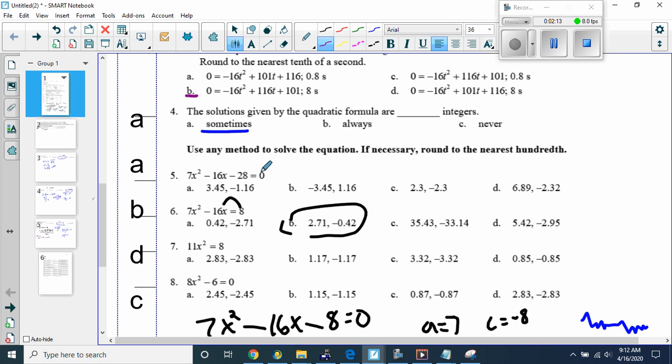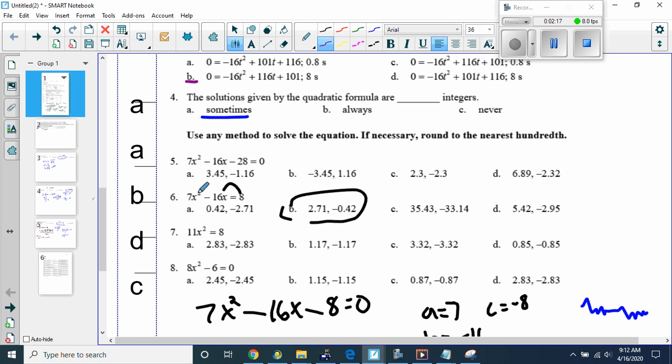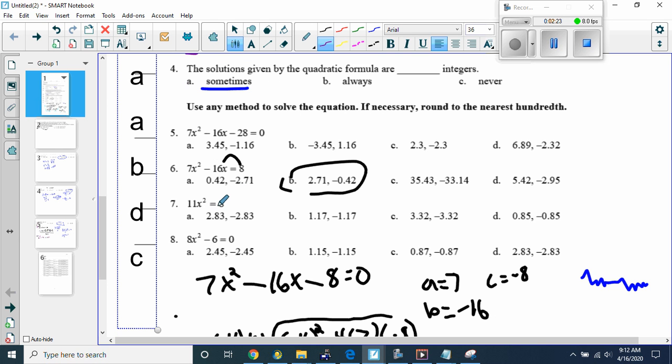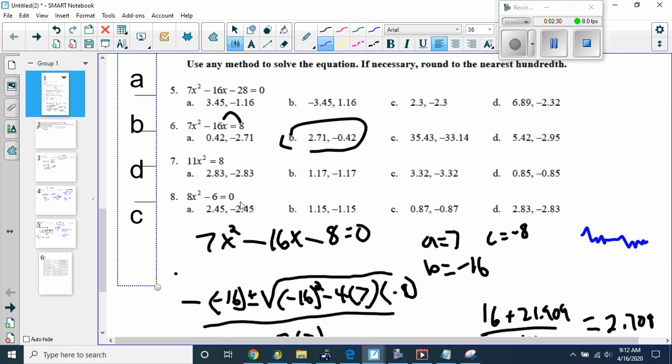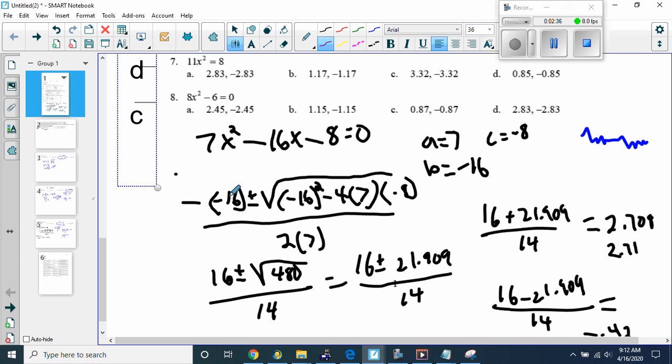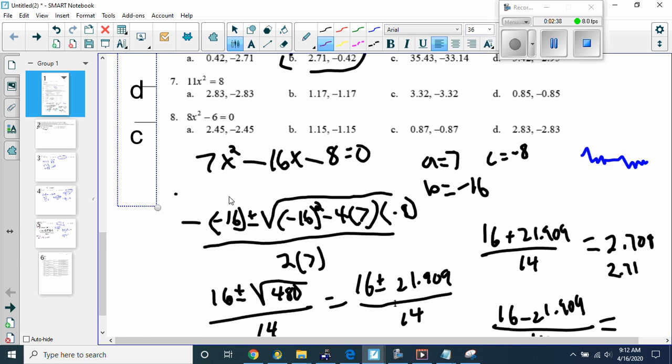So this one here, I would probably use the quadratic formula. For number 6, I would bring 8 over and use the quadratic formula. For 7, I would use square roots. I would divide by 11 and take the square root of both sides. Number 8, I would add 6, divide by 8, and take the square root.